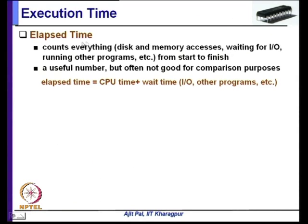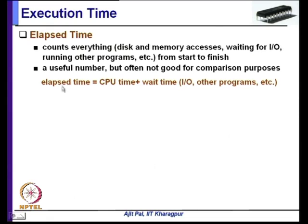Elapsed time counts everything — disk and memory accesses, waiting for IO, running other programs — from start to finish. A fraction of CPU time goes to a particular user during their task, but there are other times: time to switch tasks, waiting for IO, and operating system time. Elapsed time equals CPU time plus wait time, where wait time includes waiting for IO, waiting for other programs, and can include page faults.